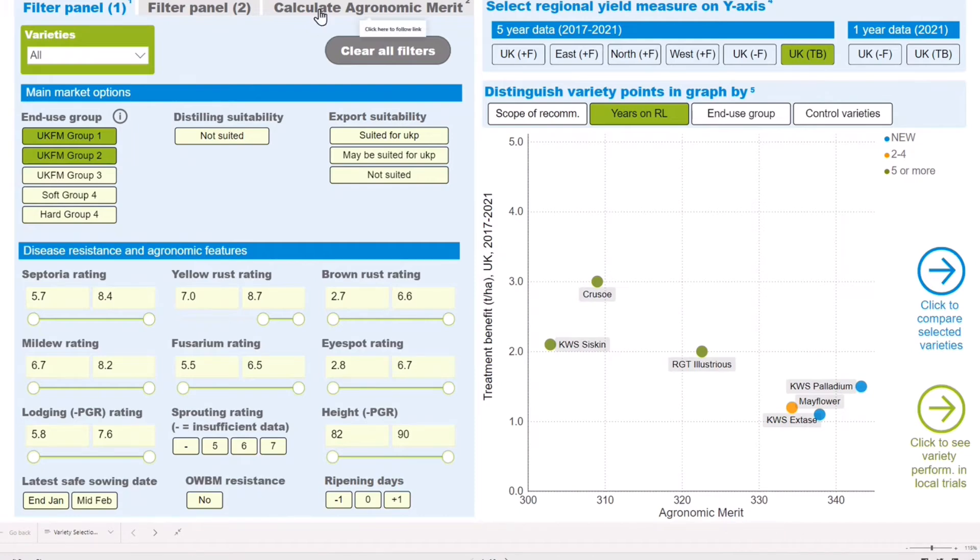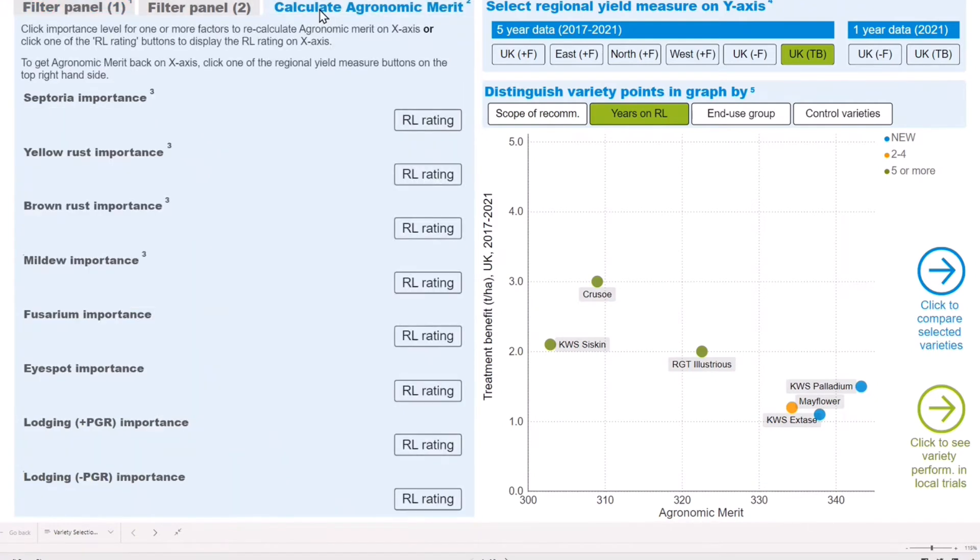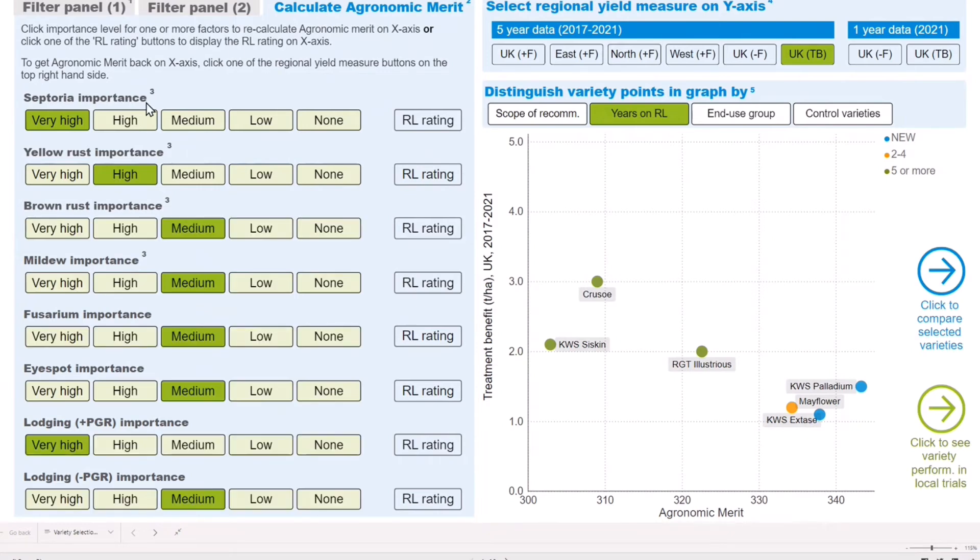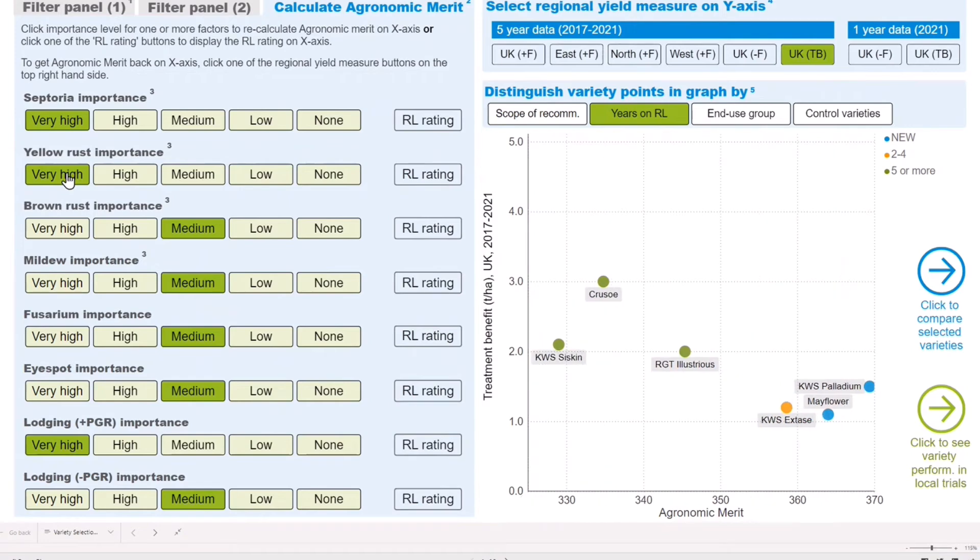Click on the calculate agronomic merit button at the top left. This opens a panel that allows you to change how important each component is. The higher the importance level, the greater the score using the agronomic merit calculation. Varieties with a higher agronomic merit sit towards the right on the chart.